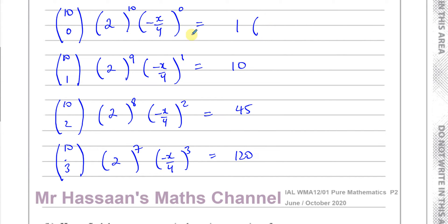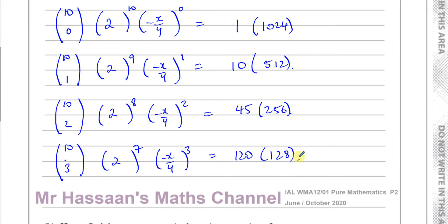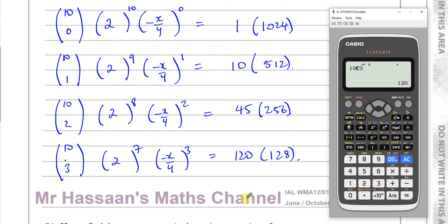Then for the second part, 2 to the power of 10 is 1024. 2 to the power of 9 is half of that, which is 512. 2 to the power of 8 is half of that, which is 256. And 2 to the power of 7 is half of that, which is 128. Basically, you're dividing by 2 each time when you go down by 1 power.